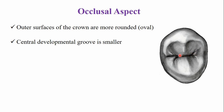The central developmental groove is shorter compared to the central developmental groove of the first premolar. There are supplementary grooves radiating from the central developmental groove — these are small and give the crown a wrinkled appearance. The triangular ridges are smaller compared to the first premolar, forming a transverse ridge. There are also a mesial triangular fossa and a distal triangular fossa on the occlusal surface.